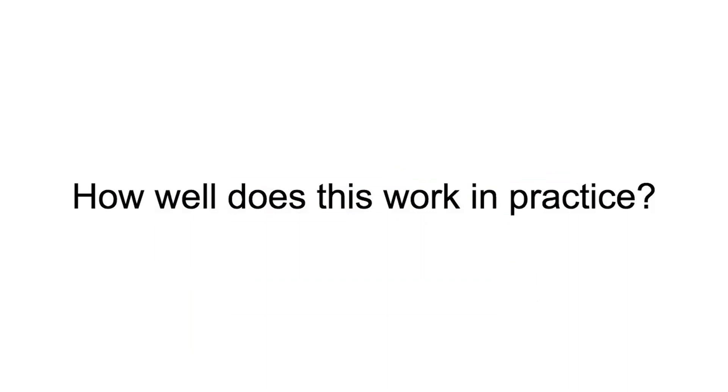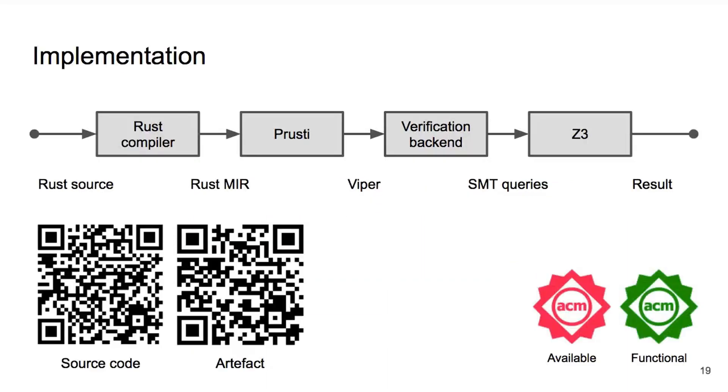So how well does all of this actually work? We have implemented our methodology as an extension to the Prusty verifier. This tool works as a plugin to the Rust compiler. The compiler compiles code provided by the user to the intermediate representation MIR, which is processed by Prusty and converted to Viper code. This code is verified by one of Viper's verification backends, both of which ultimately generate SMT queries and use a standard SMT solver Z3 to check their validity. Errors, if any, are translated by Prusty and mapped back to their original locations in the Rust program. To be able to integrate with this architecture, we had to design an encoding of our methodology into Viper code, and therefore first-order logic. The source code for our artifact, as well as an archive of it, are available online.